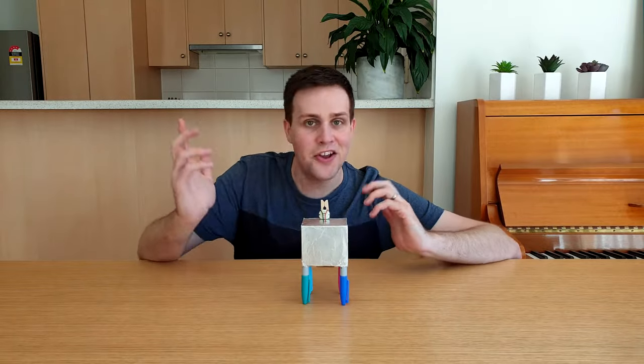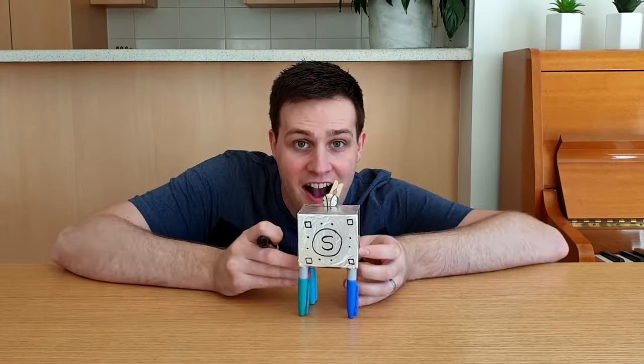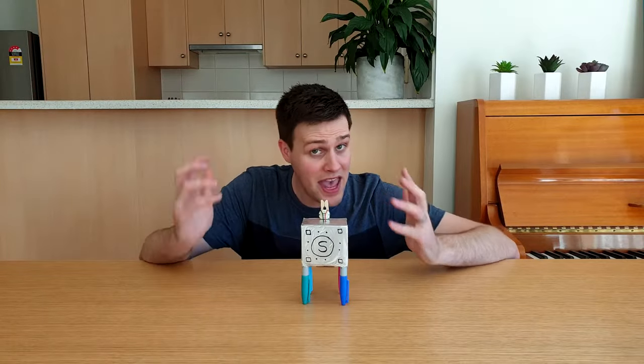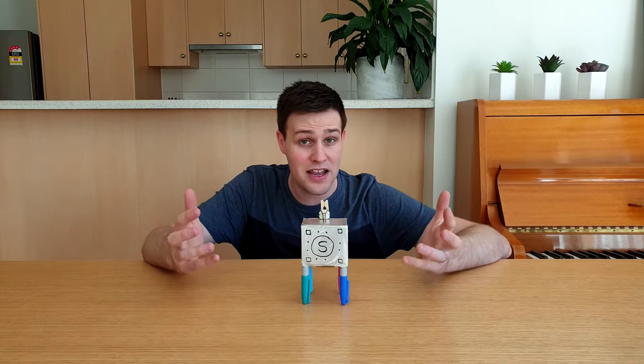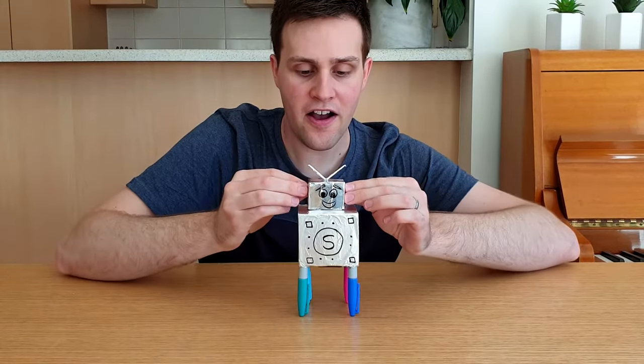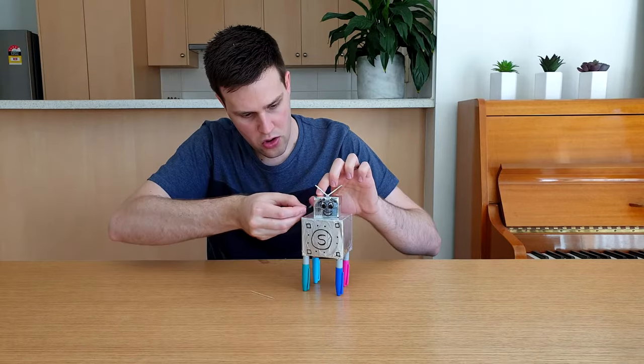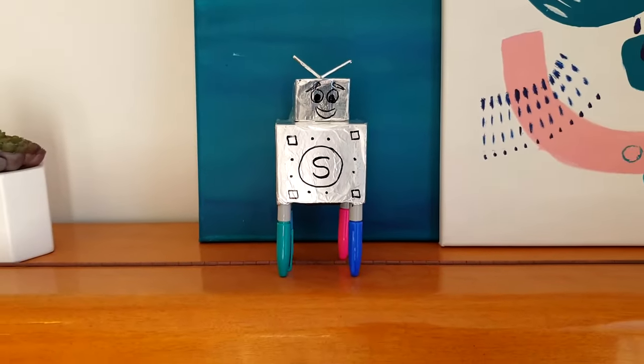Lastly, add Scribbles' original logo to the front of the box. And then give him a head by covering a smaller box with aluminum foil, drawing a face on it, and taping this to the top of the box. And there he is! Your very own Scribbles!